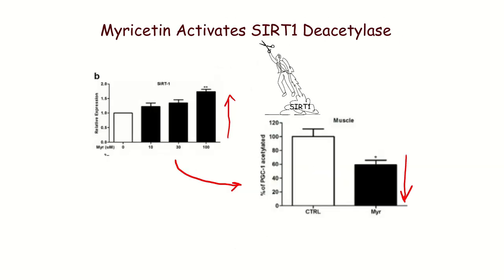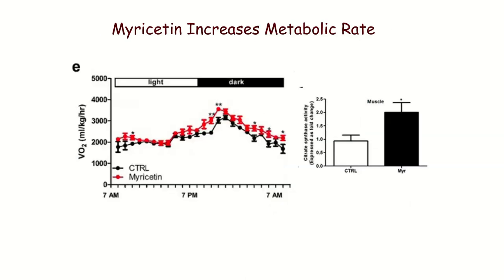As myricetin increases, so does SIRT1 expression and activity. SIRT1 has its little scissors taking acetyl groups off enzymes. In muscle tissue of mice given myricetin, only half as much of PGC-1α — a very important metabolic enzyme — was acetylated, because myricetin gets rid of PARP, which increases NAD+, and SIRT1 requires NAD+ to do its job of deacetylating enzymes, getting metabolism running again. These mice absolutely have a higher metabolic rate throughout the day. Mice are nocturnal so they're more active at night, and especially at night they're simply burning more energy than mice not given myricetin.